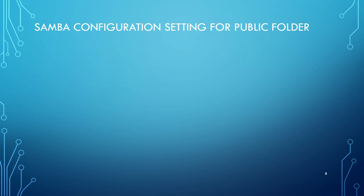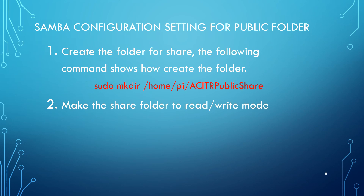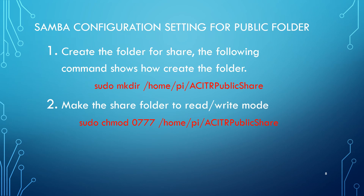Before editing the Samba configuration, we need to create the share folder for public access. Run the make directory command: sudo mkdir /home/pi/acit-room/public-share to create the new folder. After creating the folder, we need to set the folder to read/write mode. Run the change mode command: sudo chmod 0777 /home/pi/acit-room/public-share. Otherwise, new files and folders cannot be created in the share folder.